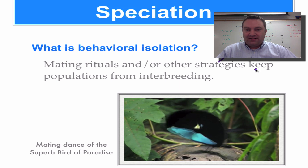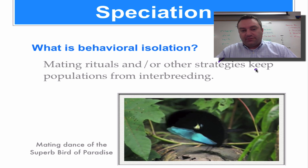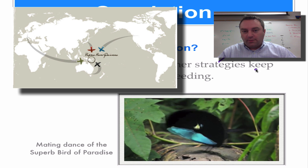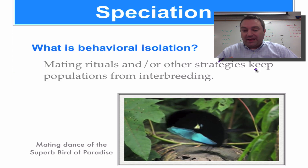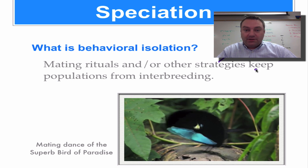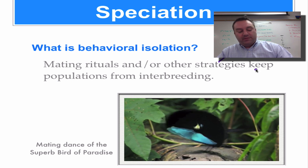One of the neatest birds are the birds of paradise, found in Southeast Asia on the island of Papua New Guinea. We're going to watch the mating dance of the superb bird of paradise. Normally it just looks like a plain black bird with a little bit of blue on its belly, but that blue comes into play when it's displaying to attract a mate. If he doesn't display and do his dance correctly, he won't get a mate — only females will mate with males who perform this dance correctly.